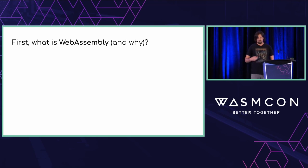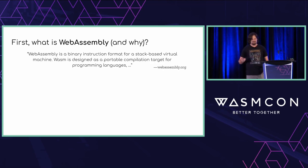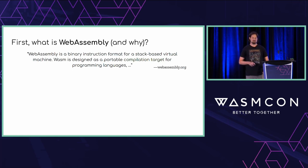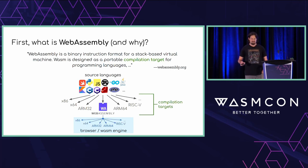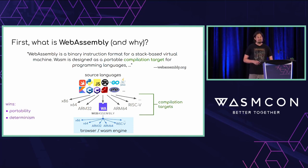We're here at WasmCon, and people probably already have a pretty good idea of this. To quote the standard definition, WebAssembly is a binary instruction format for a stack-based virtual machine. Wasm is designed as a portable compilation target for programming languages. The operative phrase here is compilation target, which means we can take our variety of source languages and compile them to WebAssembly. A Wasm engine will internally compile it to the actual instruction set it's running on. This buys us portability, determinism, control flow integrity, and sub-process sandboxing.